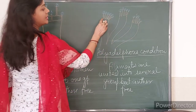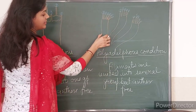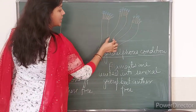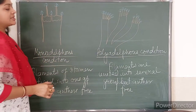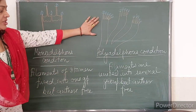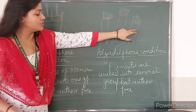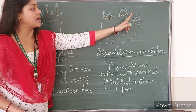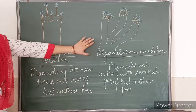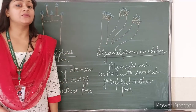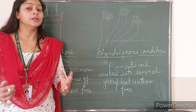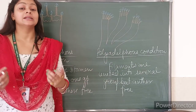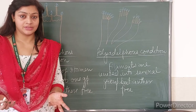In Polyadelphous condition, you can see that filaments are fused and united into several groups, but anthers are free. This condition is known as Polyadelphous condition. If you want two groups, you can also consider it as Diadelphous condition.